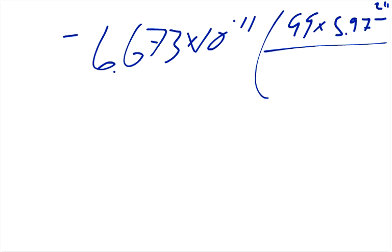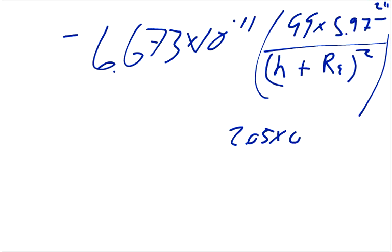we have to take the height plus the radius of the Earth, so the height plus the radius of the Earth, and the height that it gave us was 2.05 times 10, and so this has to be squared, make sure you square that,